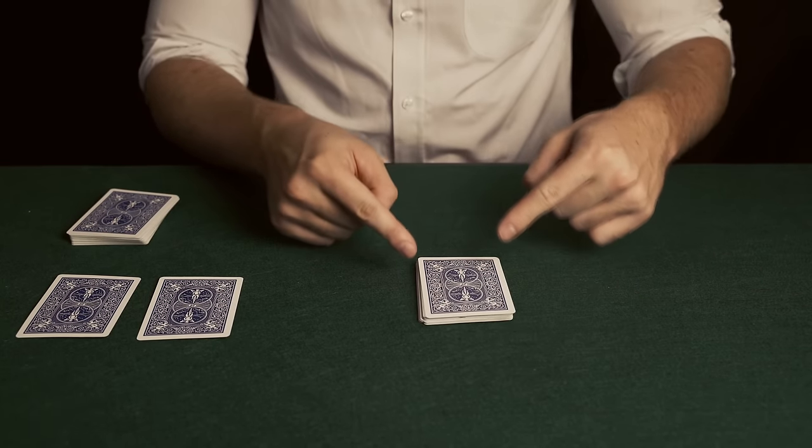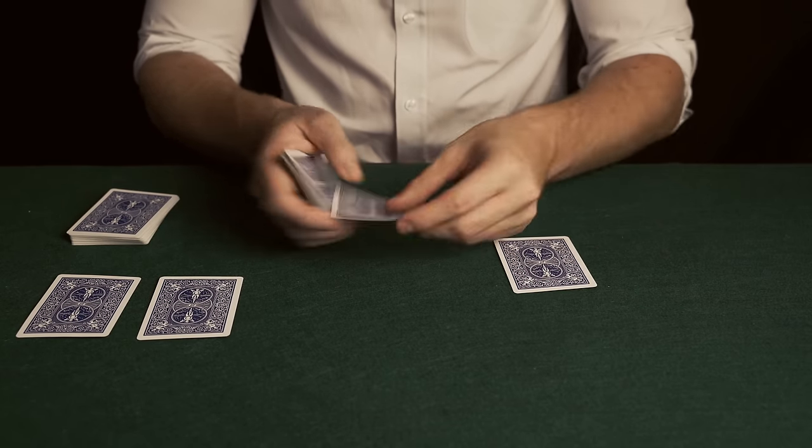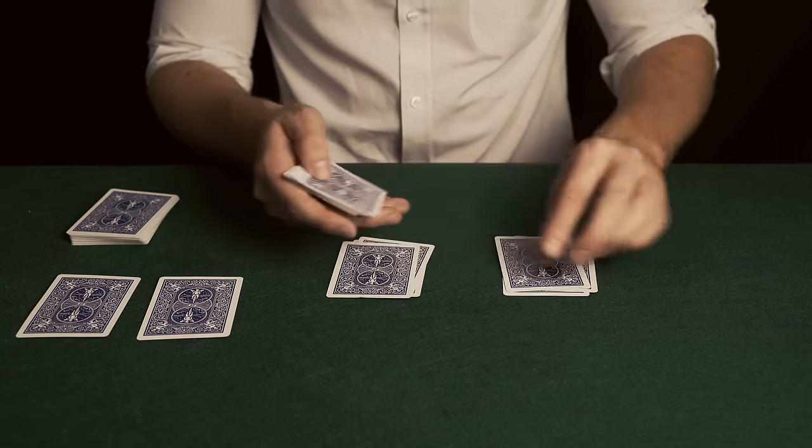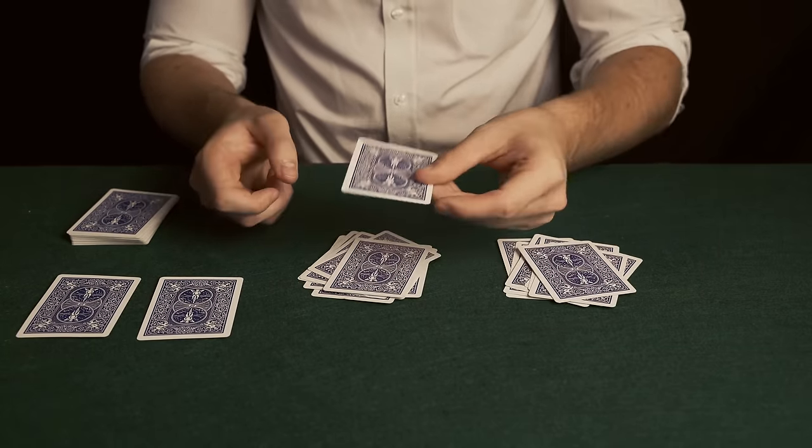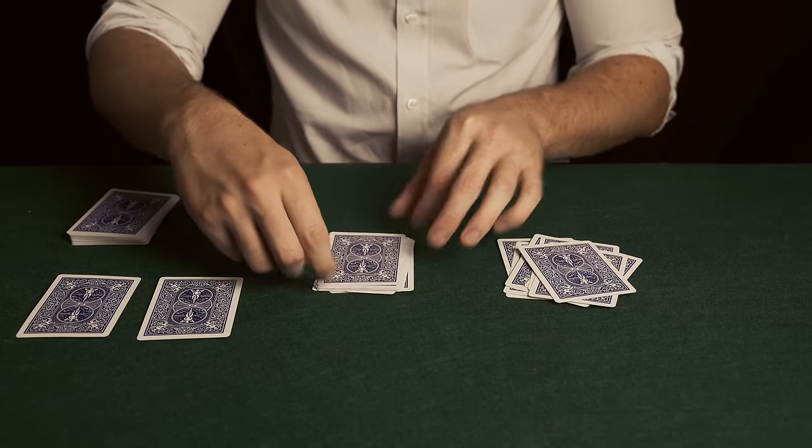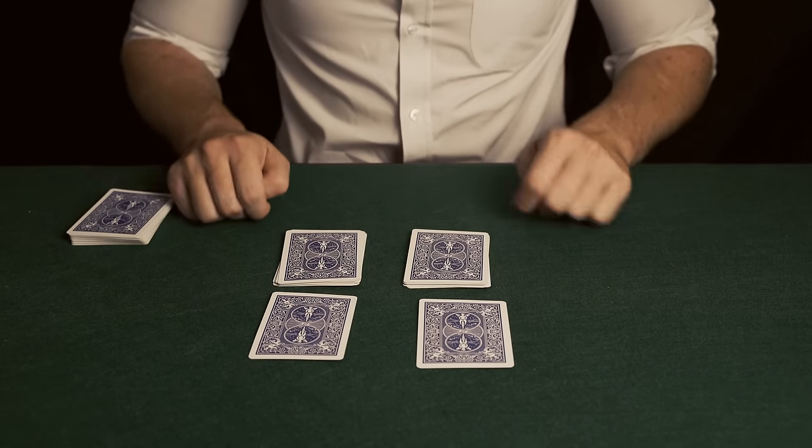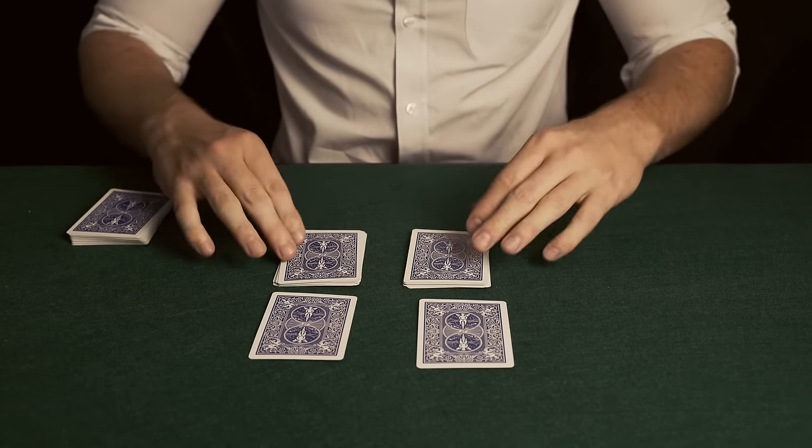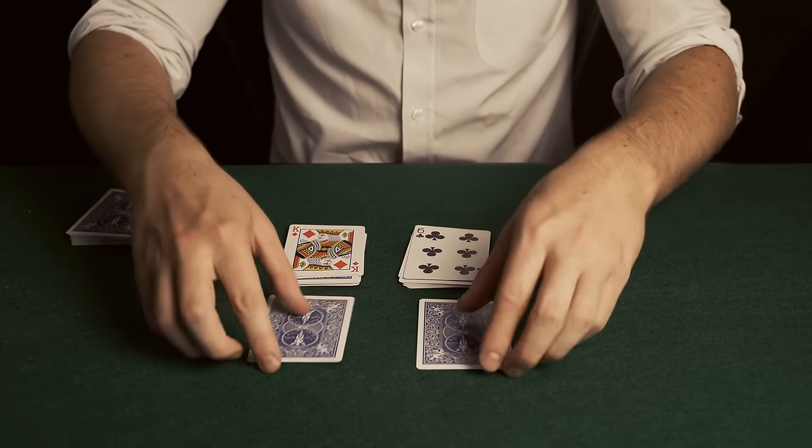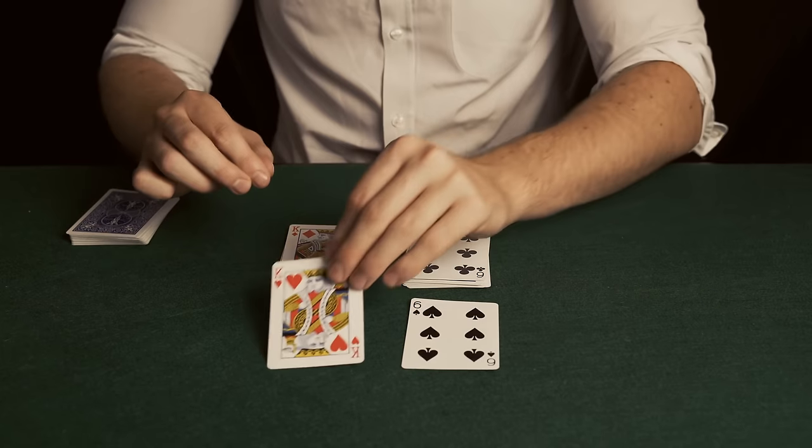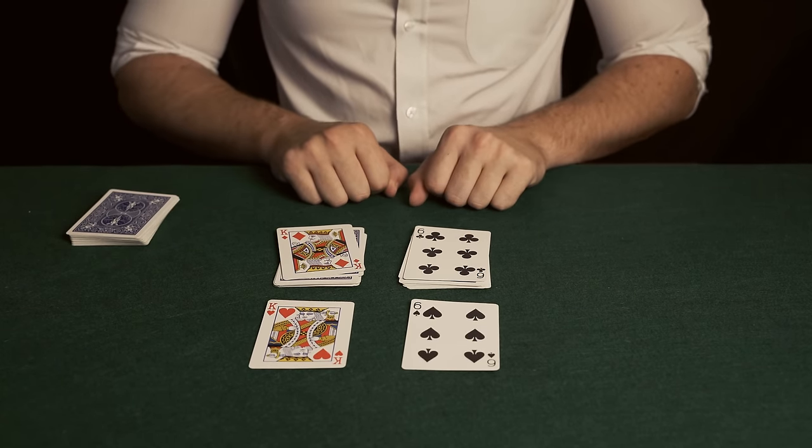Derren was instructed to deal this random pile of cards into two more piles. The magician reiterated how he had never touched the cards himself and Derren had made every decision from a shuffled deck. Derren had stopped at the king of diamonds and six of clubs. The magician's predictions were the exact matching cards. Derren was fooled.